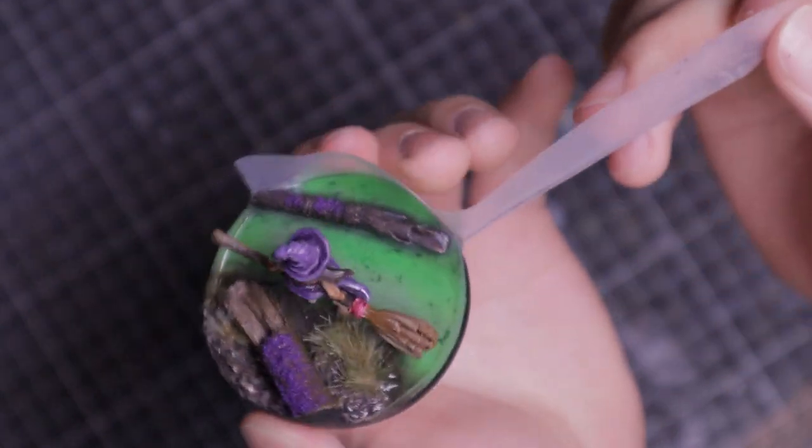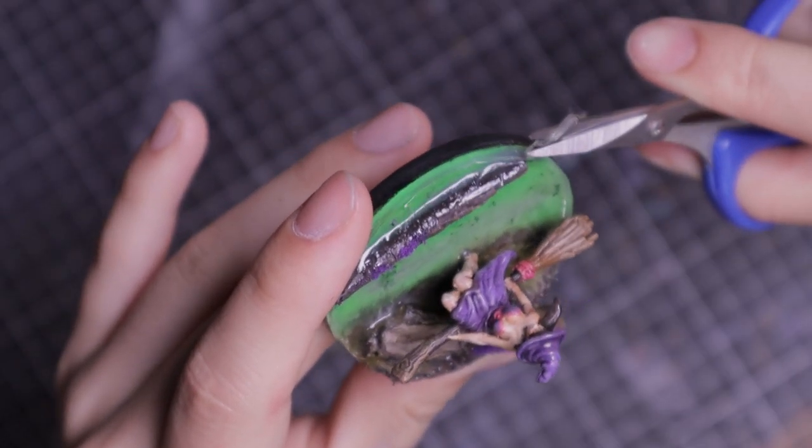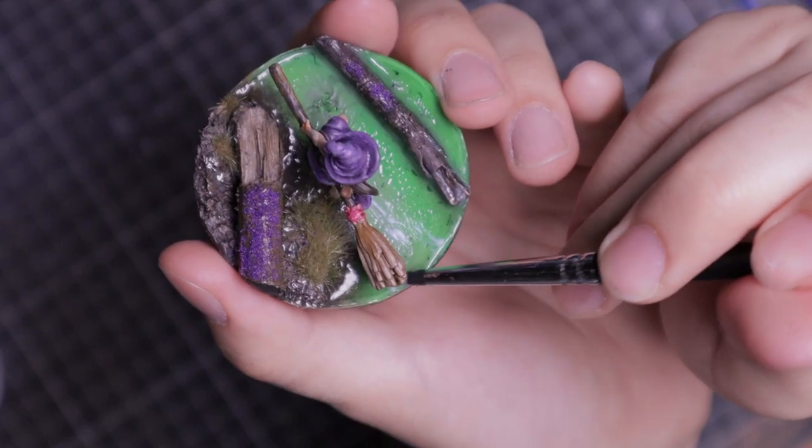Once the resin is cured, remove the tape and clean it up. Finally brush on some water texture to create a ripple effect.